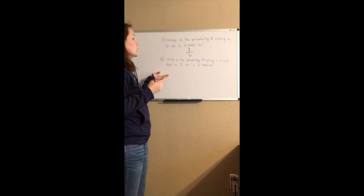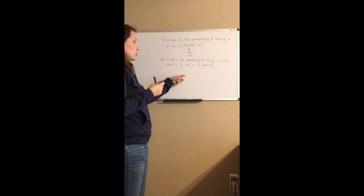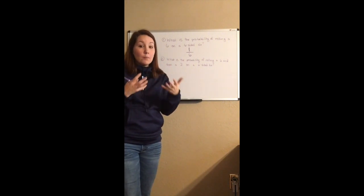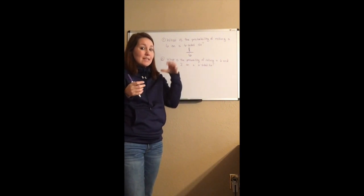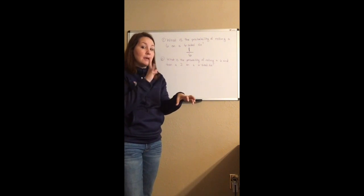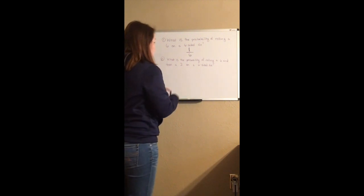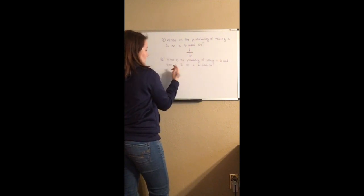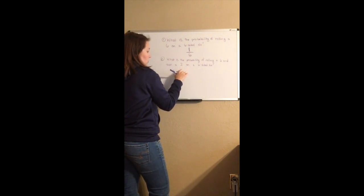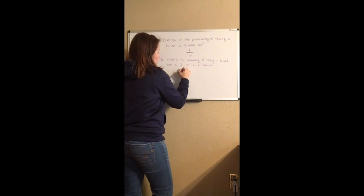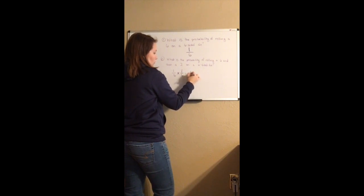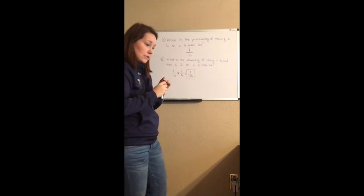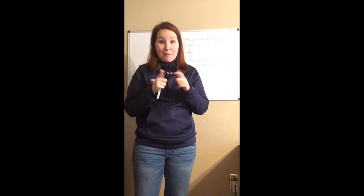Now, what's the probability of rolling a six and then a two? That's compound probability — one event occurring and then another. We take the probability of the first event and multiply it by the probability of the second. Rolling a six is one over six, and rolling a two is also one over six. Multiplying those together gives us one over 36.